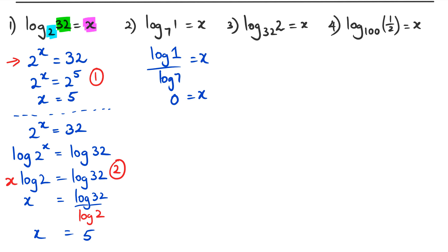Let's test it out. We have 7 as the base, x as the power, and the answer is 1, which means 7^x = 1. Any number to the power of 0 equals 1, so in this case x is equal to 0.